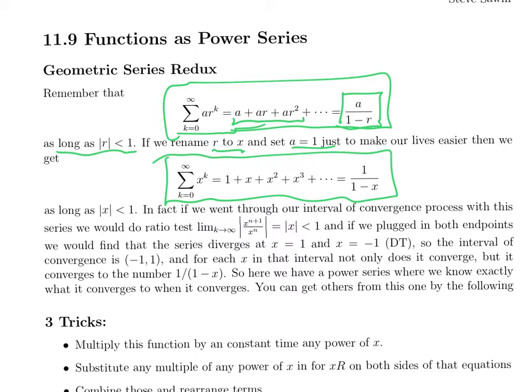Remember what that means. If you cut this infinite sum off at some finite point, you'll then be looking at a polynomial. That polynomial will be a good approximation to this function on this interval, the interval from minus 1 to 1. And we'll explore that next time a little bit.